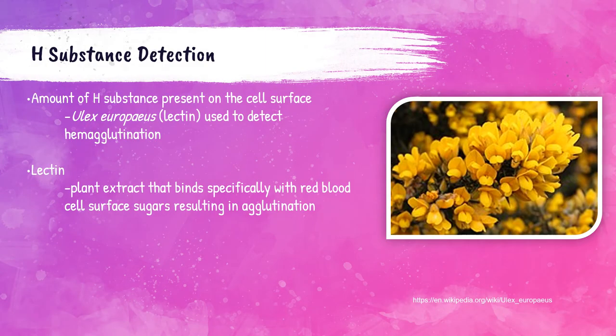Ulex europaeus is the scientific name for the common gorse plant. Material removed from the seeds of this plant is called a lectin. The lectin from Ulex europaeus acts like an antibody directed towards the H antigen — the more H antigen present on the surface of the red blood cell, the stronger the reaction. There's another lectin used in the blood bank more frequently, called Dolichos biflorus, which we'll discuss later, but there are two different lectins to be aware of.